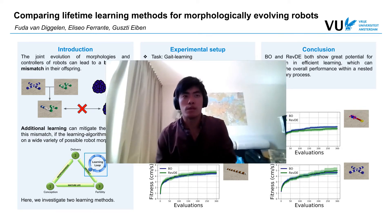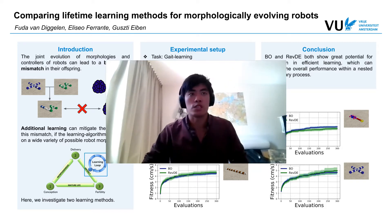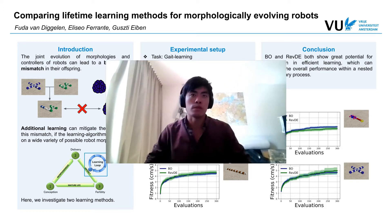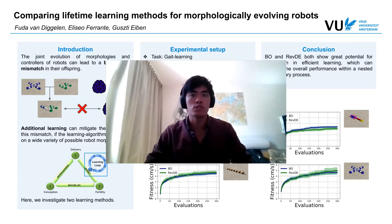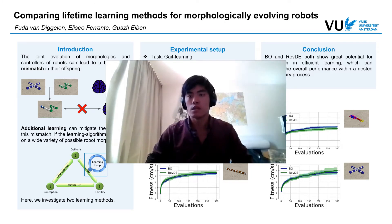Hello everyone. My name is Fouda van Dichelen and I will be presenting my poster comparing lifetime learning methods for morphologically evolving robots. This work has been co-authored by Eliseo Ferranten and Kusty Eiber.